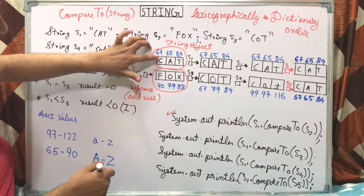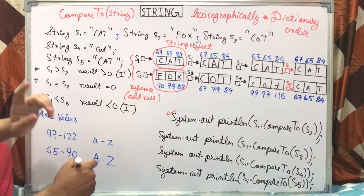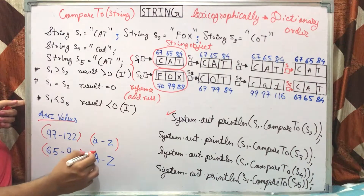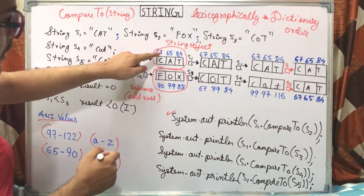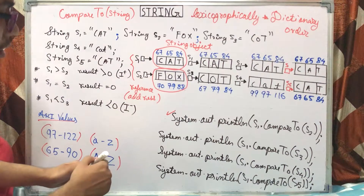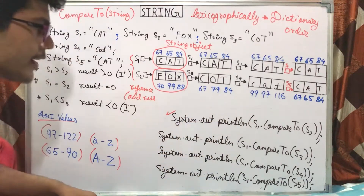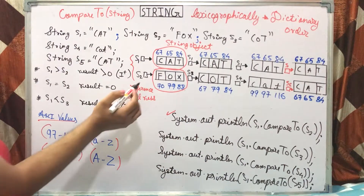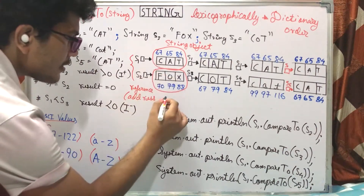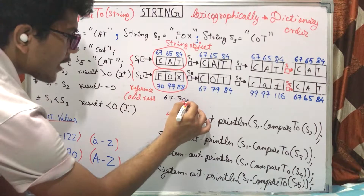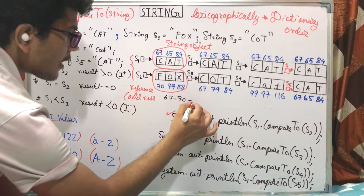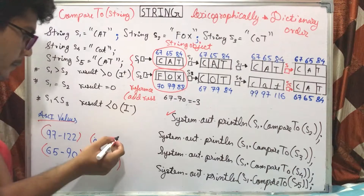Here C has ASCII code 67. Small a to z is 97 to 122, and capital A to Z is 65 to 90. So for s1.compareTo(s2), comparing C and F: C is 67, F is 70. The result is 67 minus 70, which is minus 3.